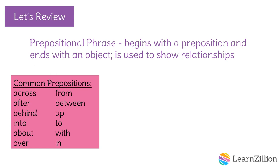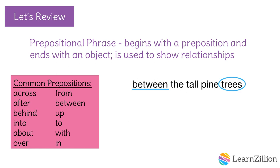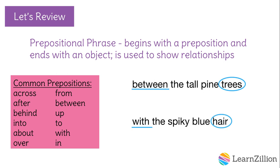Let's look at some examples. "Between the tall pine trees" is a prepositional phrase. It begins with a preposition, "between," and ends with a noun, "trees," that acts as our object. Here's another example: "with spiky blue hair" — "with" is our preposition, and "hair" is our object.